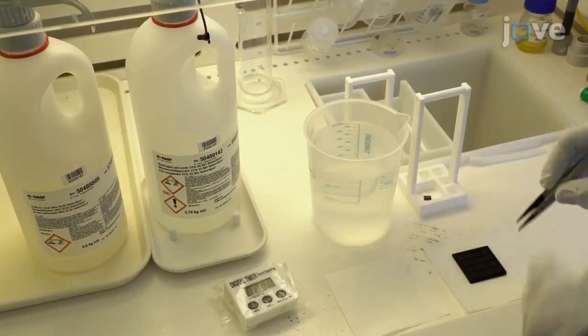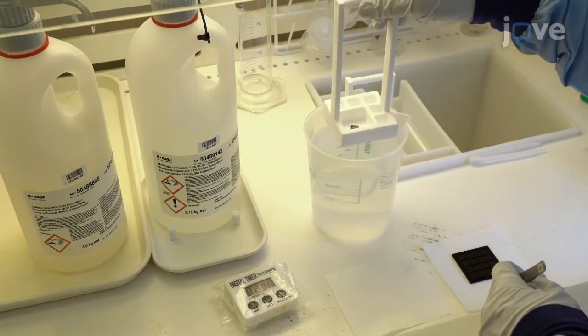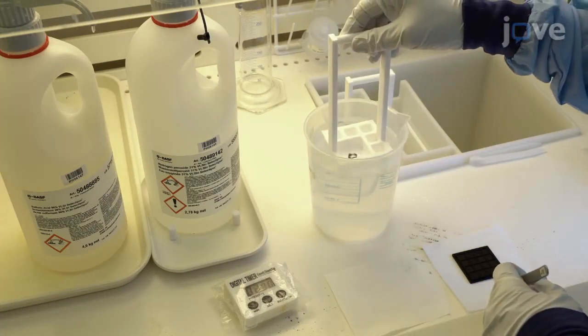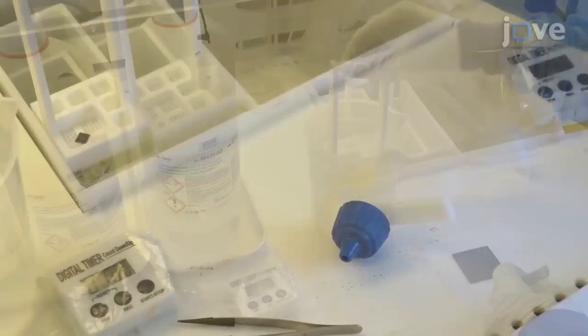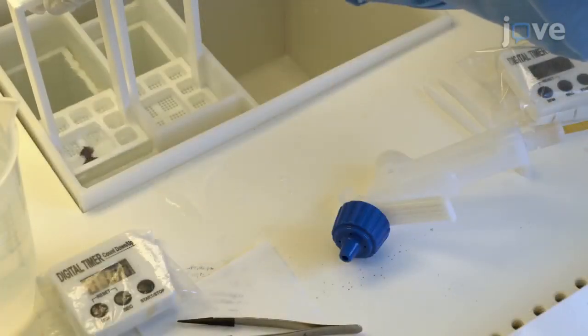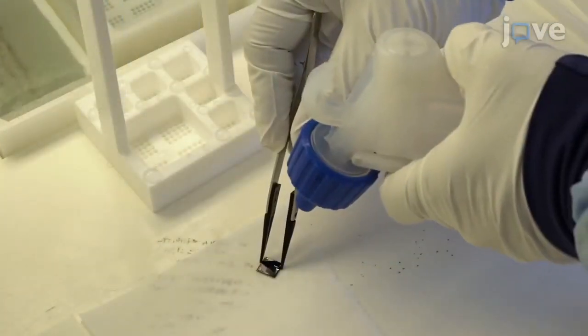Etch the MESA to act as the active region by placing the device in a solution of water, sulfuric acid, and hydrogen peroxide. Rinse the device with deionized water for 30 seconds and dry with nitrogen gas.